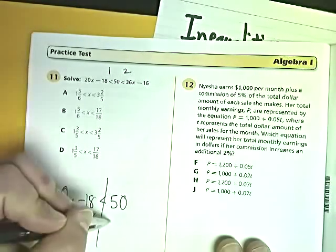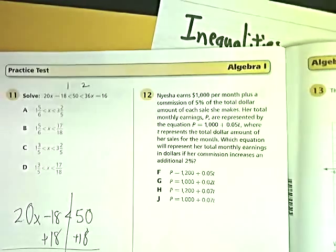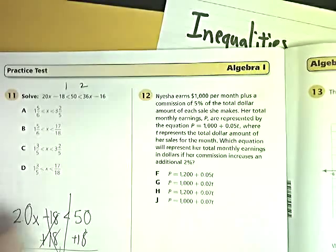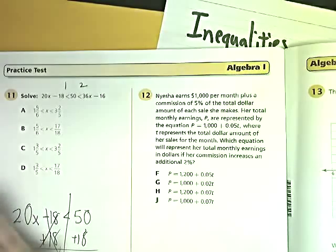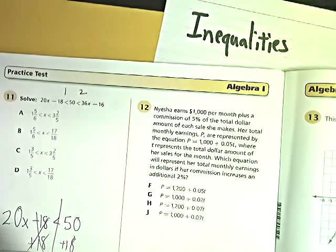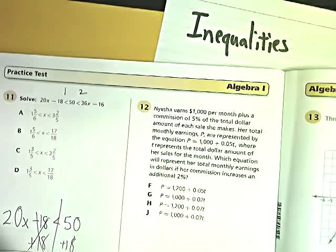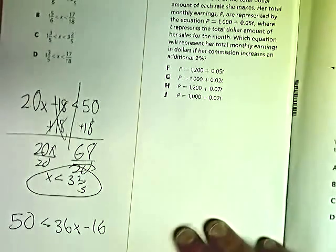You add 18, you get 68. Bring down your 20x. Divide by 20. 68 divided by 20 gives me 3 and 2 fifths. That's one of them, just like that.